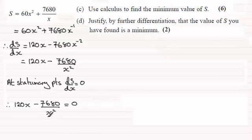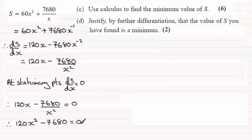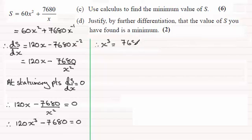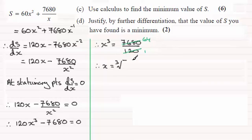To solve this equation, because it has a fraction with x squared, I'm going to get rid of that by multiplying each term by x squared. That means 120x times x squared is 120x cubed, and minus 7680 equals 0. Rearranging for x cubed, x cubed equals 7680 divided by 120, which goes in 64 times. So x cubed equals 64, and taking the cube root of both sides, x equals the cube root of 64, which is the nice clean value of 4.